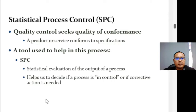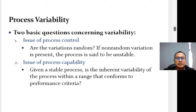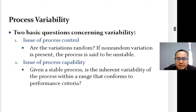All processes generate output and exhibit some degree of variability. The key issue is whether the output variations are within an acceptable range. This is addressed by answering two basic questions: first, are the variations random? If non-random variations are present, the process is considered unstable and corrective action is needed. Second, given a stable process, is the inherent variability of process output within a range that confirms performance criteria? This involves assessment of process capability.